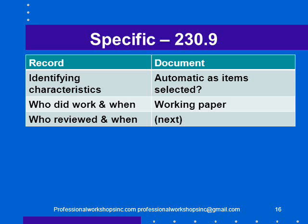Another specific requirement: we are to record identifying characteristics, and that should be automatic as we select items. For example, 'I want to look at five invoices — I've picked invoice numbers one, seven, and nine' — well, I've documented the identifying characteristics. Also: who did the work and when, which is in the working paper presumably, and who reviewed the work and when — let's go to the next slide for that.